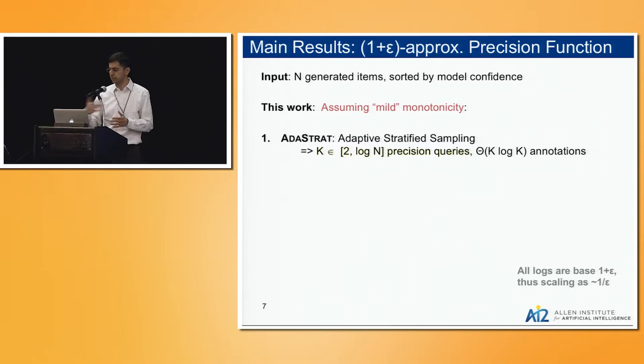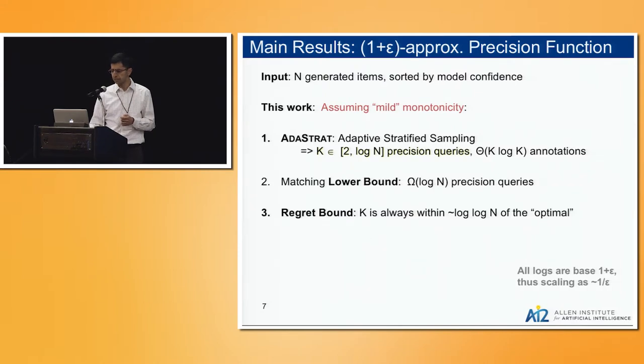It makes so many queries and correspondingly you need k log k actual annotations. We did some theoretical analysis and showed that this is actually best possible in an asymptotic worst case sense for algorithms that operate this way, that pick these blue points and try to annotate them. We also have some regret analysis showing that this k, although data dependent, is close to optimal.